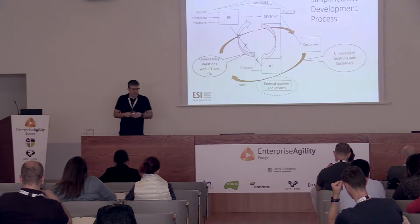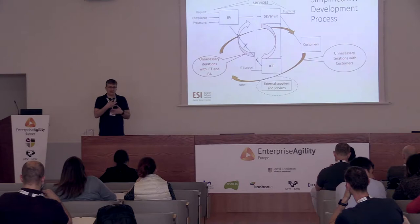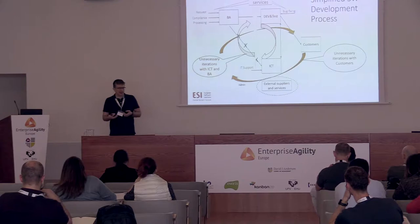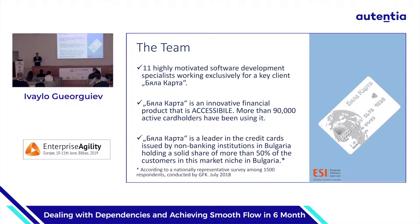During the interviews, we discovered a team that had changed its way of working to a more agile approach. It was a team working for one of the key clients, Biała Karta — which means 'white card'. It's a product dominating the Bulgarian market and also present in Polish and Romanian markets. It's a credit card that is accessible — almost everyone can have it in a very short time without too much bureaucracy. It's a typical fintech non-banking product.